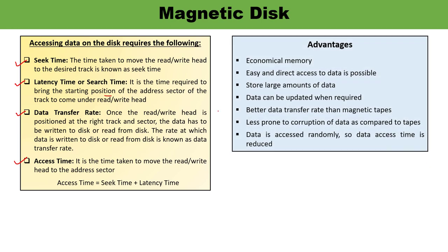Some advantages of magnetic disk: it is economical memory, and easy and direct access of data is possible. Large amounts of data can be stored because multiple disks can be clubbed together. Data can be rewritten and updated as required. The data transfer rate is better in comparison to magnetic tapes. Data corruption is less likely than with tapes, and data can be accessed randomly, meaning data access time is less.